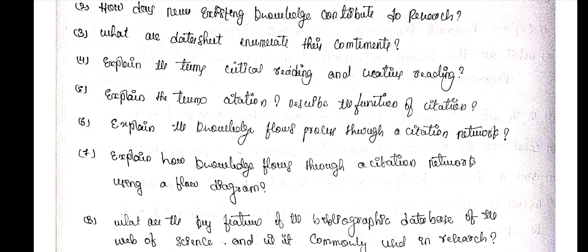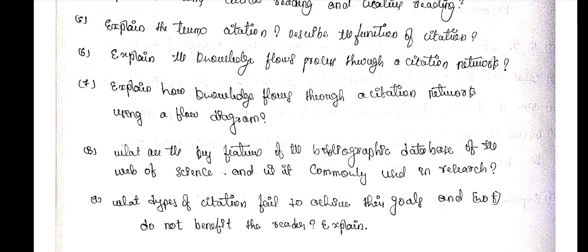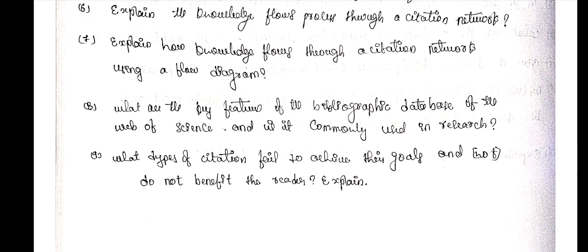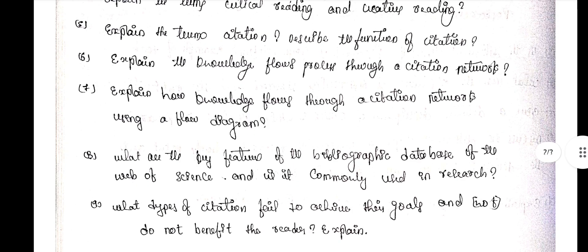Question 7 — explain how knowledge flows through a citations network using a flow diagram. Question 8 — what are the key factors of the bibliographic data sheet of the database of the Web of Science, and is it commonly used in research? Question 9 — what types of citations fail to achieve their goals and do not benefit the reader? Explain. These nine questions have been raised so many times, so I have written only these nine questions in this PDF, as they are very importantly repeated in the model question papers.